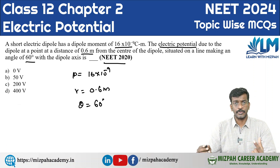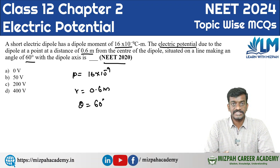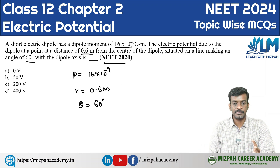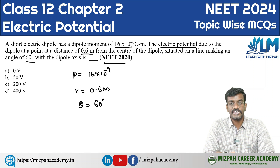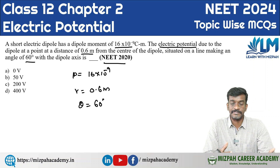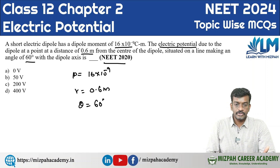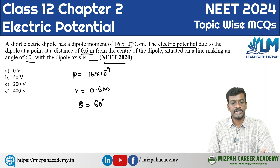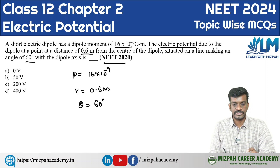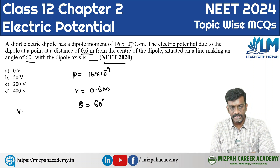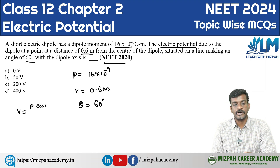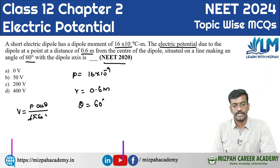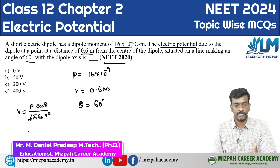Let's calculate the answer. Very simple and important formula. The formula for electric potential due to a dipole is: V = (1 / 4πε₀) × (P cosθ / r²). Here, P is the dipole moment, theta is the angle, and r is the distance.